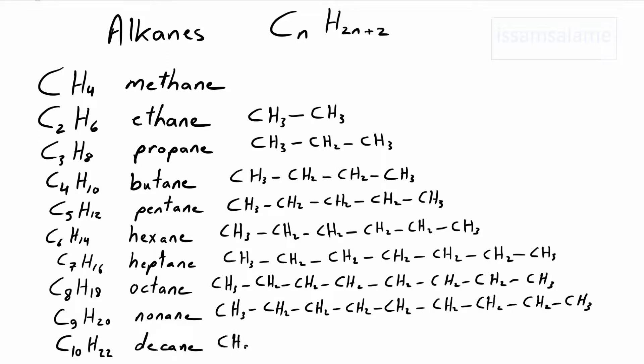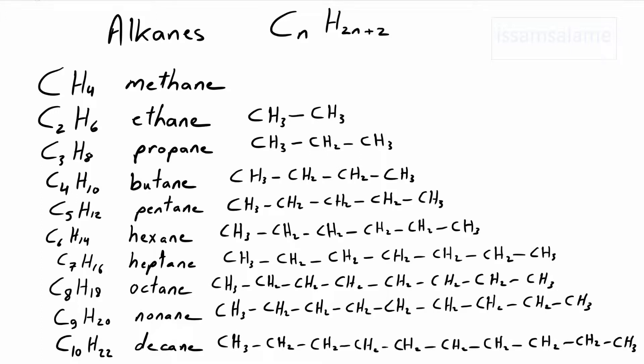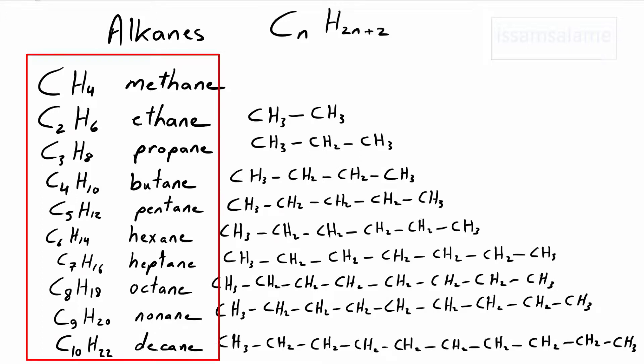Ten carbon atoms is called decane. As I told you, you have to memorize these names and relate them to the number of carbon atoms: one — methane, two — ethane, three — propane, four — butane, five — pentane, six — hexane, seven — heptane, eight — octane, nine — nonane, ten — decane. We are going to use these prefixes with all the other organic compounds.